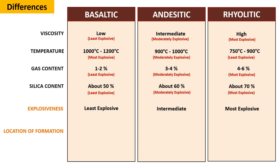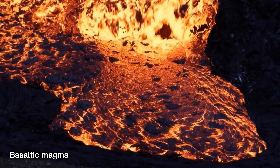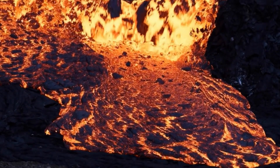Again, basaltic magma is formed in both oceanic and continental crusts. Andesitic magma is formed in areas where the edges of continents are connected to subduction zones. And rhyolitic magma is formed in the continental crusts.